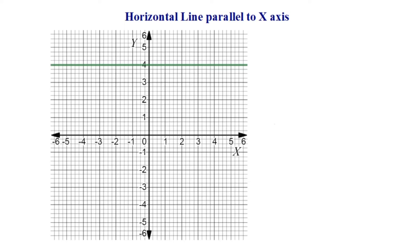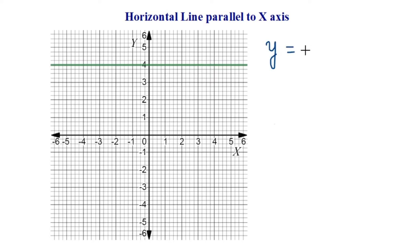Now we'll take a look at how to find the equations of these horizontal and vertical lines. You can observe that this is a horizontal line which is parallel to the x axis. We'll see two ways in which we can find the equations. The first one is quite logical. We can observe that this is a horizontal straight line which passes through y is equal to 4. For this straight line, all the points have a y coordinate of 4, and hence the equation of this line is y is equal to 4.